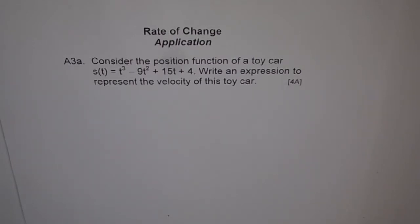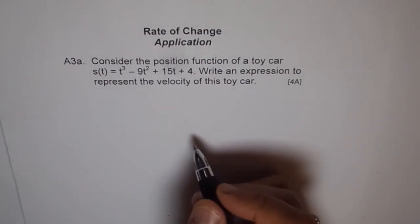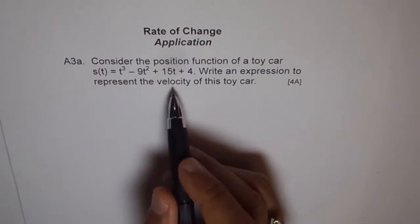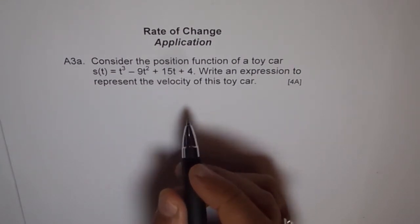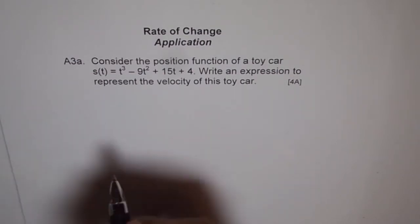Write an expression to represent the velocity of this toy car. Velocity is the rate of change of position, so we have to find the instantaneous rate of change of this function. The best way to do it, in fact the only way to get the expression, is to use the difference quotient method. Once we get velocity, we will use this velocity and this function to answer many other questions, which will be part B and C. Let's do this part first - the instantaneous rate of change.